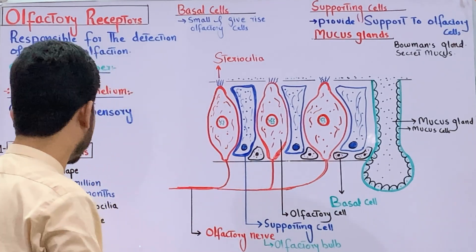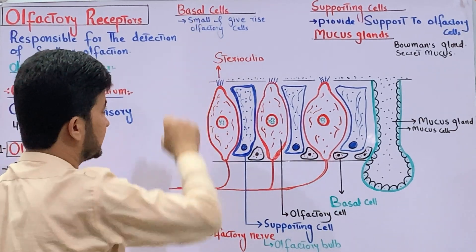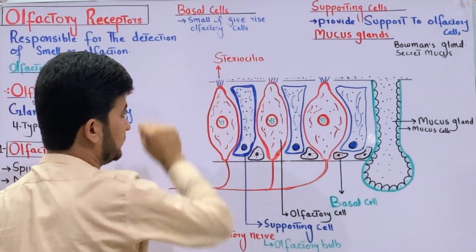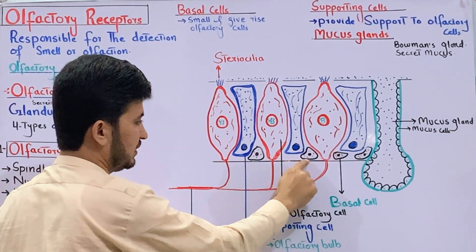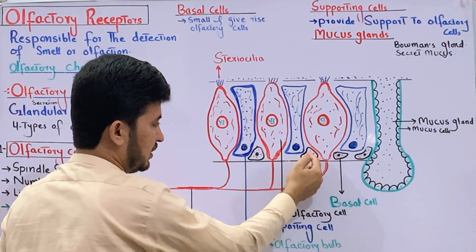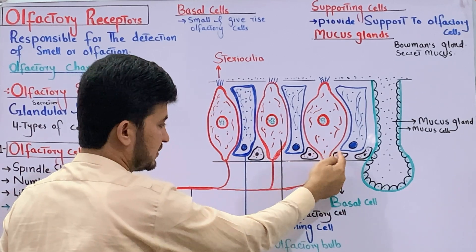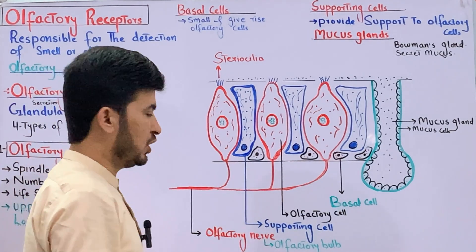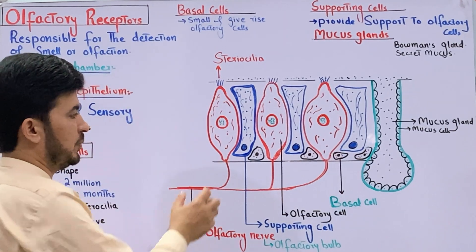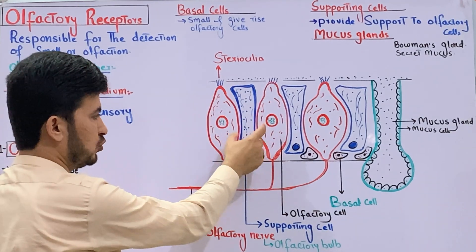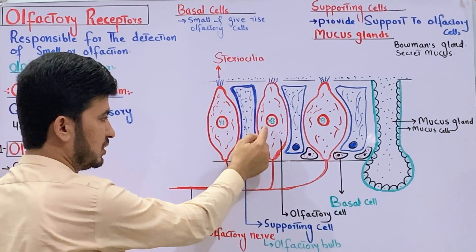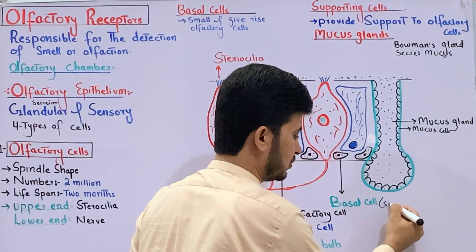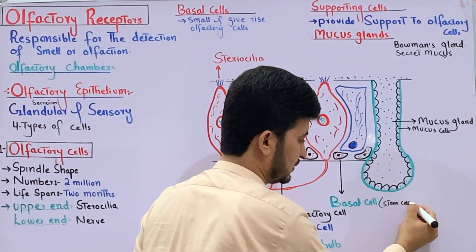The second type of cell is basal cells. Basal cells are small cells located at the basal membrane. Their function is to store and replace olfactory cells. After 2 months, when olfactory cells are finished, basal cells — acting as a type of stem cell — generate new olfactory cells.